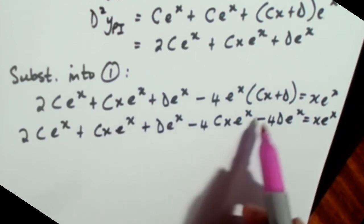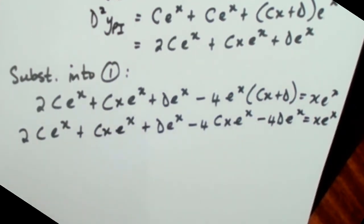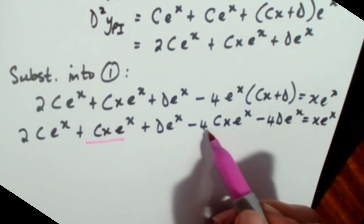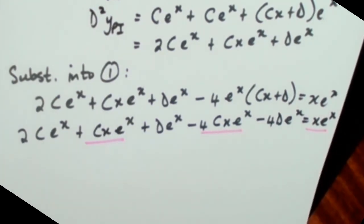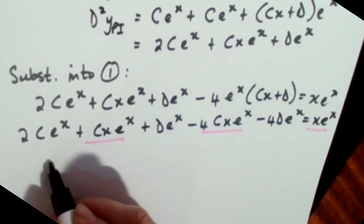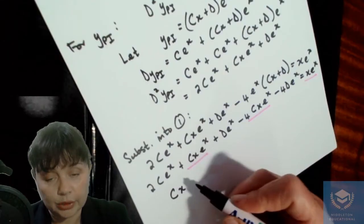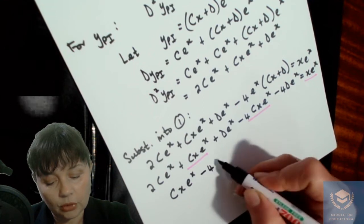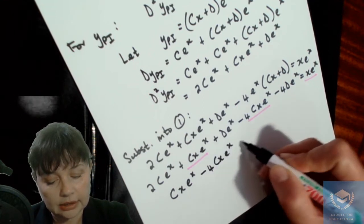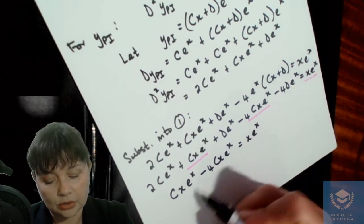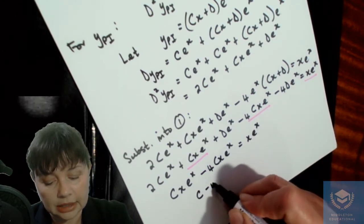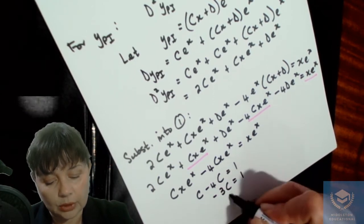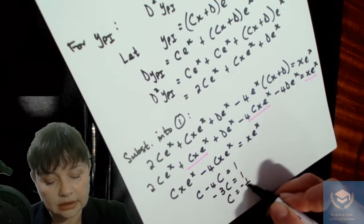Let's look at the xe to the x terms first. That gives us cxe to the x minus 4cxe to the x has to equal xe to the x. So c minus 4c has to equal 1, which means minus 3c equals 1, which means c has to be negative one third.